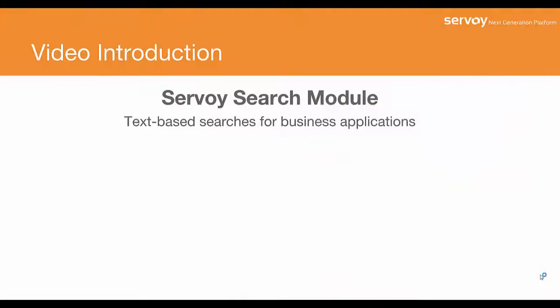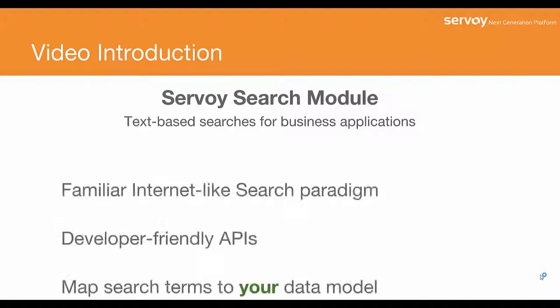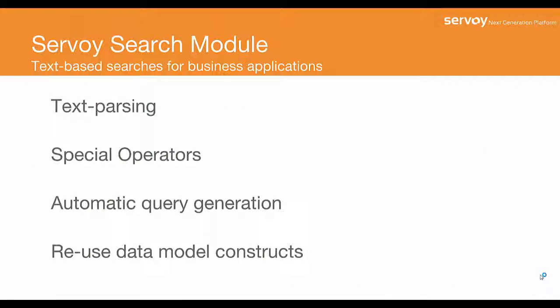Thanks for joining me for this video tutorial of Servoy's SVY search module. This module is easy to use and will help you to deliver Google-like text searches against your own data model. Simply use the API to map the relations and columns from your database that you want to make searchable, then pass in the raw user input. The SVY search module will do the heavy lifting like parsing text and generating queries. Let's take a closer look.